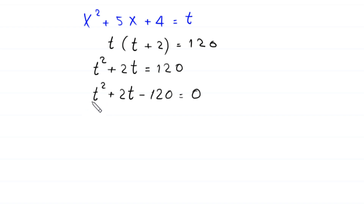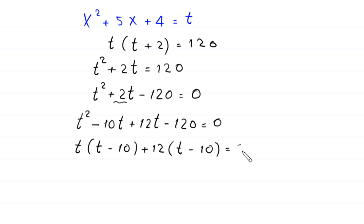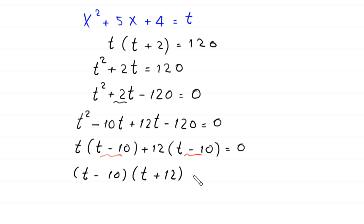This is a quadratic equation and is factorable. We split 2t as −10t+12t, giving t²−10t+12t−120 = 0. Factoring: from the first two terms we factor out t, leaving (t−10); from the last two terms we factor out 12, leaving (t−10). So (t−10)(t+12) = 0.